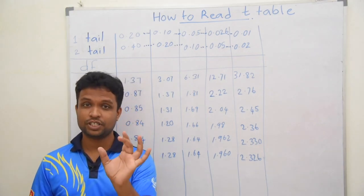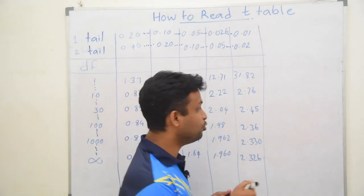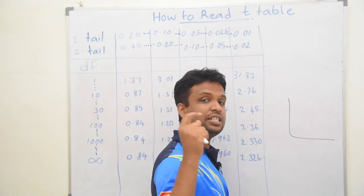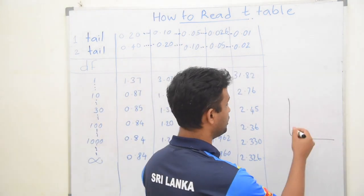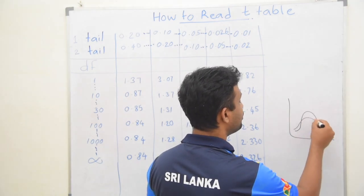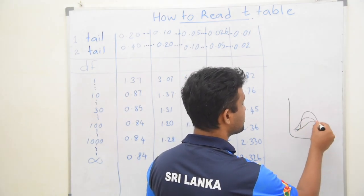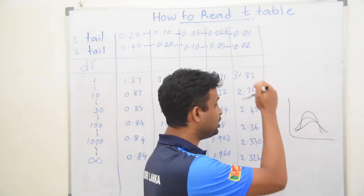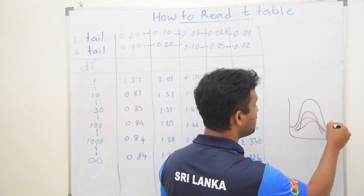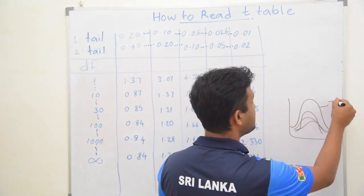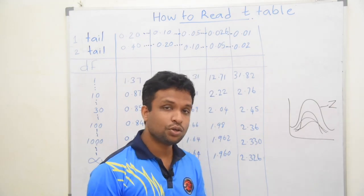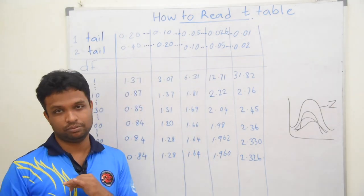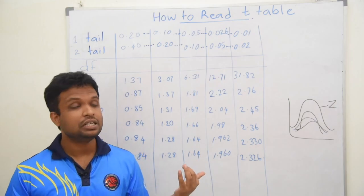A specific thing about T-distribution is that, depending on the degrees of freedom, we get different shapes. When you increase the sample size to infinity, it will approximate the exact Z-distribution. So this is a part of the T-table — this is not the full T-table.